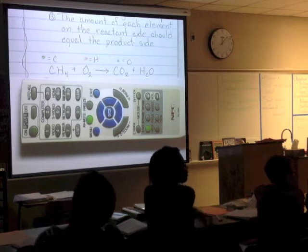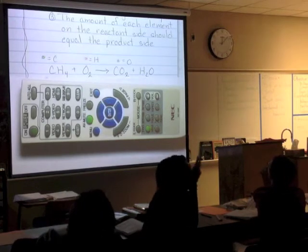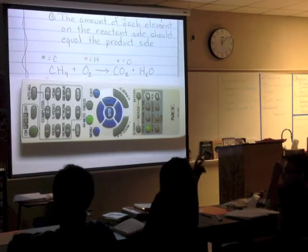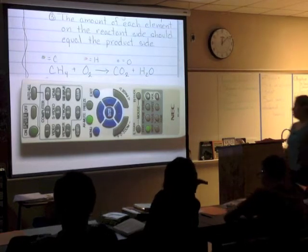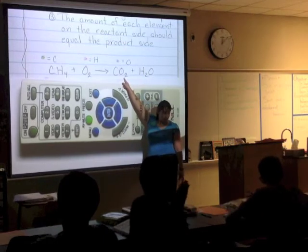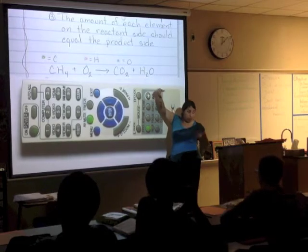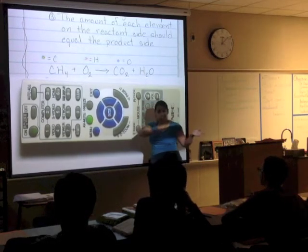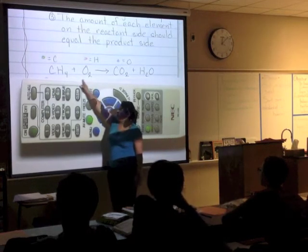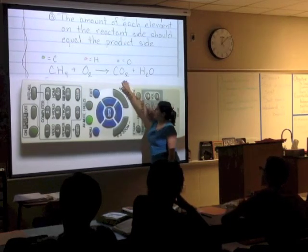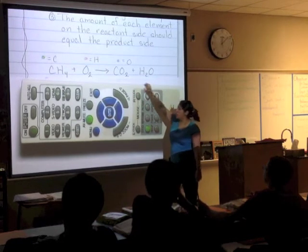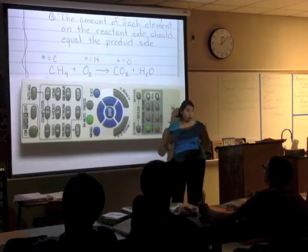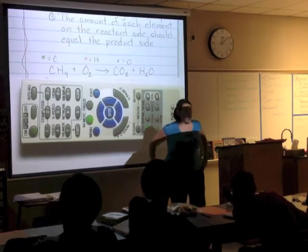There are two oxygens on the reactant side — so now look at the product side, how many oxygens are there? On the product side here you have two and here you have one. Two plus one gives me three. So it doesn't follow the law of conservation of mass, right? So we're going to have to do something that we call balancing the equation — we're going to have to add some coefficients to make sure it follows the law of conservation of mass.